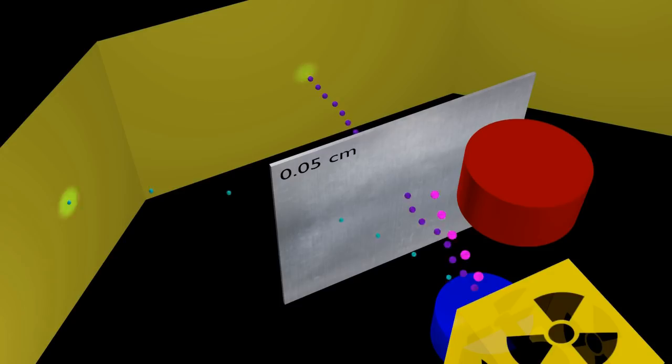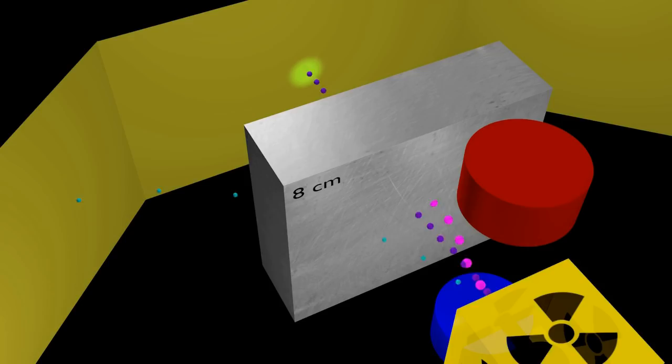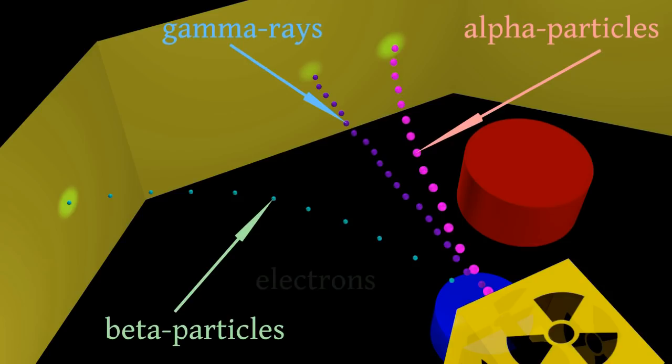With an 8 cm thick aluminum plate, the intensity of gamma particles is reduced to half while beta particles are completely absorbed. The beta particles were identified with the electron, which was discovered by Thomson at the same time. Alpha particles were much more massive compared to beta particles and had a positive charge; their mass was of the same order as the mass of atoms. Gamma rays were identified with X-rays, or high-energy photons.